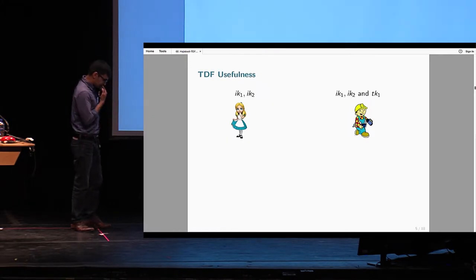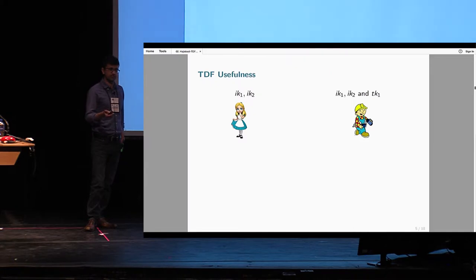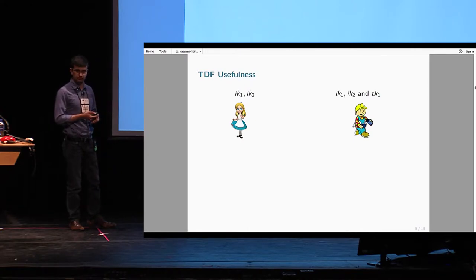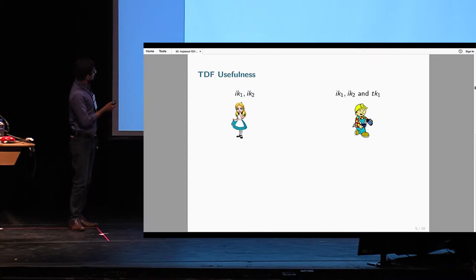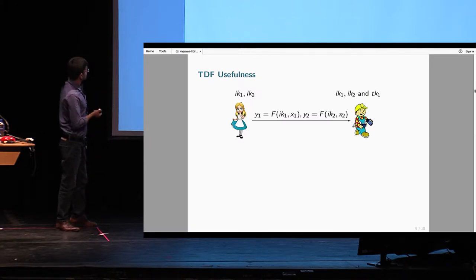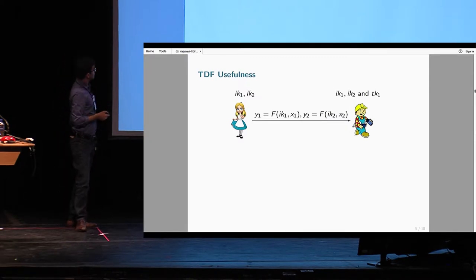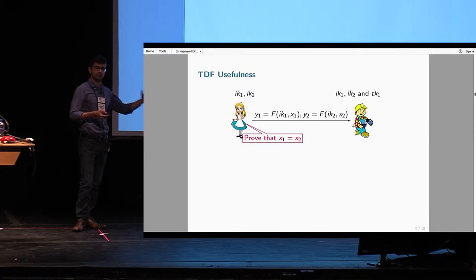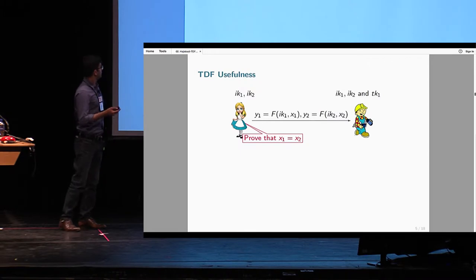You might ask: we have public encryption, it's pretty useful — why do we care about trapdoor functions? Are they a theoretical object, or do we have applications? Suppose we have a trapdoor function and two users Alice and Bob, where Alice has two index keys ik1 and ik2, and Bob has both these keys plus a trapdoor key for ik1. Alice is sending two image points y1 and y2 to Bob, made with respect to index keys ik1 and ik2, and she wants to convince Bob that these two image points correspond to the same preimage. The question is: does Bob need some kind of proof, or can he check this himself?